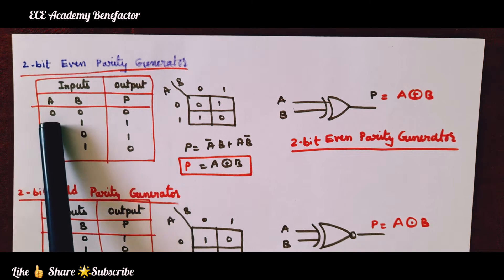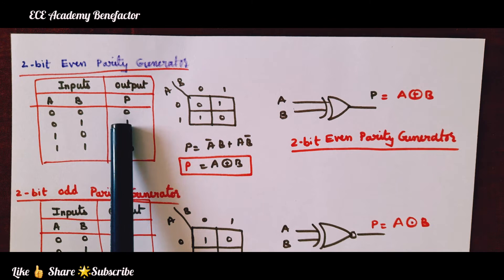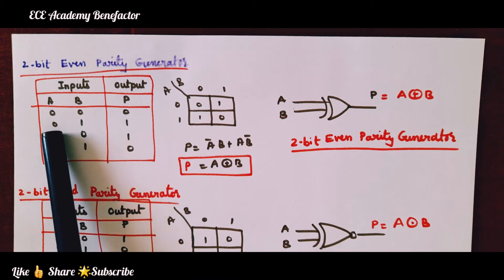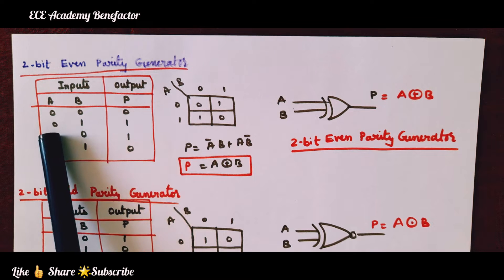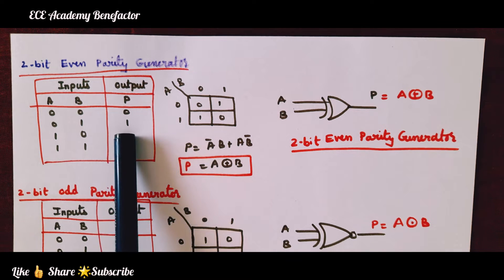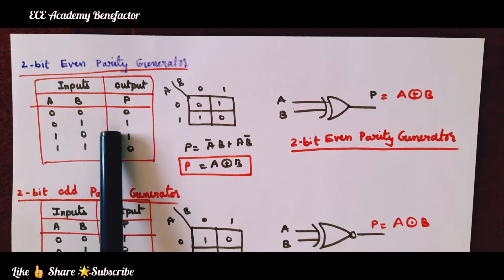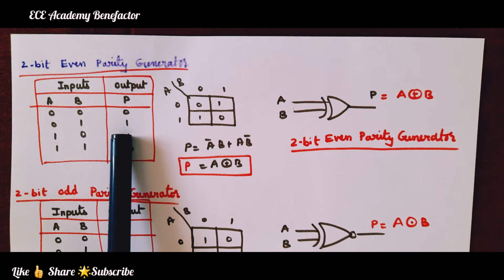Now look at this first input information 0,0. Here the parity generated will be 0. Now in this combination it is 0,1. In this input information the number of 1s is odd. What is our target? We need to generate even. So to this combination we will add one more bit parity bit 1.